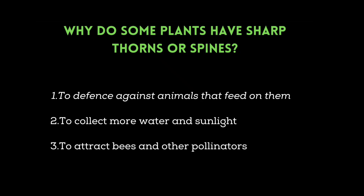Why do some plants have sharp thorns or spines? To defend against animals that feed on them, to collect more water and sunlight, or to attract bees and other pollinators. Your time starts now!